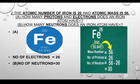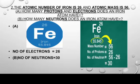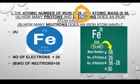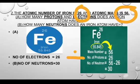In the next question, atomic mass and atomic number are given and you have to find the number of electrons, protons, and neutrons — the same method as before. Solve it yourself first. The atomic number of iron, represented by the symbol Fe, is 26 and its atomic mass is 56. If the atomic number is 26, the number of protons is 26, and since protons equal electrons, the number of electrons is also 26.